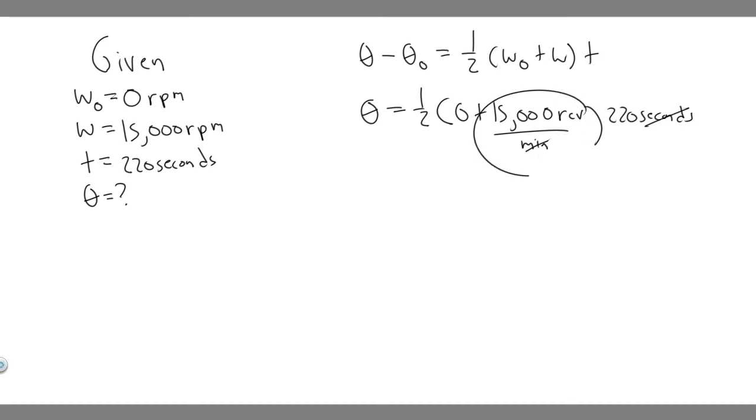So what we have to do is first convert this into revolutions per second. So 15,000 revolutions per minute, essentially all we got to do is divide it by 60 because there's one minute for every 60 seconds. That would cancel and we'd just get 15,000 over 60. So if you go ahead and do that, 15,000 over 60 is 250. So this is just going to be 250 revolutions per second.